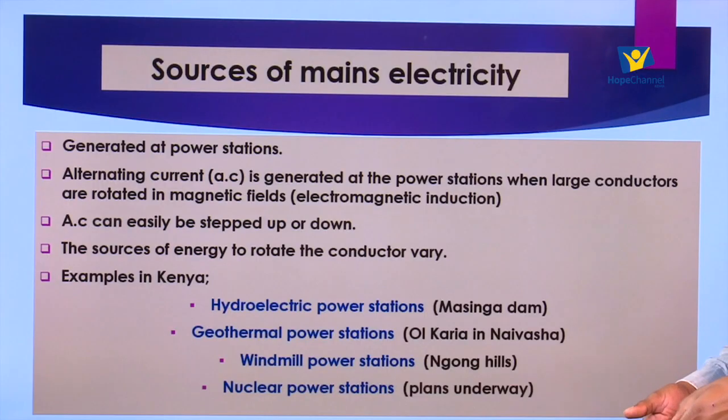Now we look at mains electricity. We have the current which is generated through electromagnetic induction at the power stations. This current is fed into the transmission cables and gets into our houses for us to make use of. In mains electricity in form four we look at how the power is transmitted from the power plants to the consumer and to the particular appliance we are using in our houses. We start our topic by looking at the sources of mains electricity.